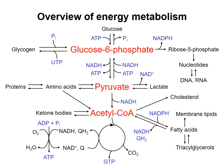In previous videos, I've described how acetyl-CoA is produced from the breakdown of triacylglycerols and the beta-oxidation of fatty acids. In most tissues, the acetyl-CoA produced is used in the citric acid cycle to provide electron carriers for ATP production.